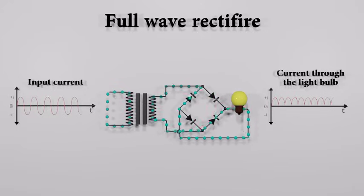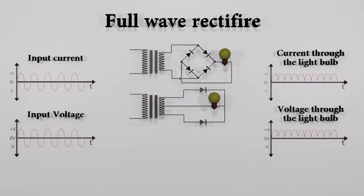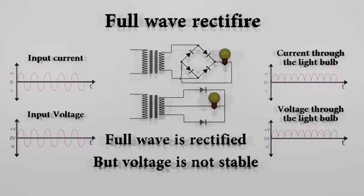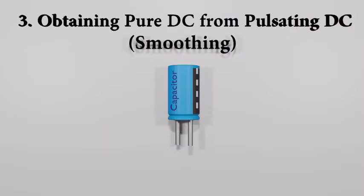Now we have rectified full-wave, but the problem is voltage is not stable. The output across the diodes in the above steps is neither complete nor is it completely DC. The output is not steady DC and is not practical to use with circuits. Let's talk about how to obtain a pure DC from pulsating DC. This is called filtering or smoothing the rectified voltage.